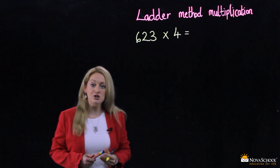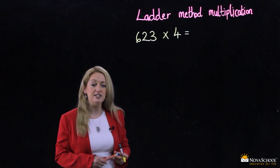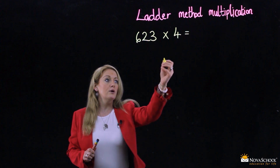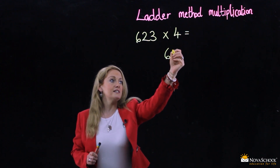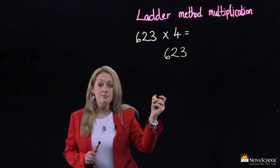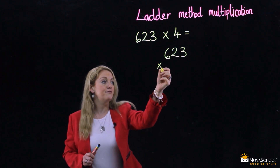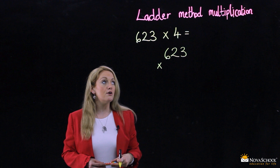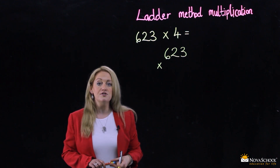Let me show you how to write out this multiplication using the ladder method. So we put the 623 here. We place our multiplication sign on the left. And then we place the number 4, the number we're multiplying by, underneath.